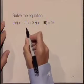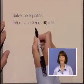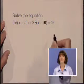Let's solve the equation. 0.6 times the quantity x plus 20 plus 0.8 times the quantity x minus 10 equals 46.